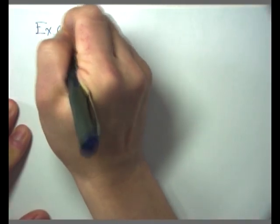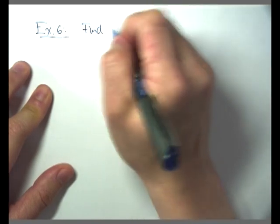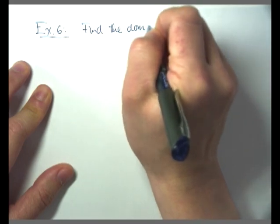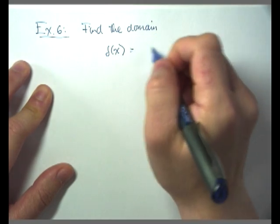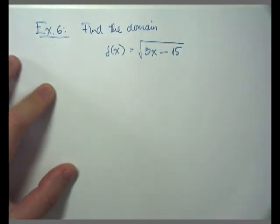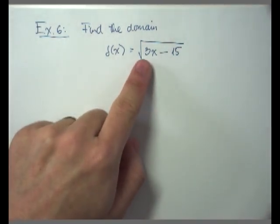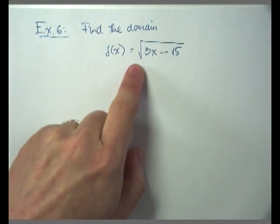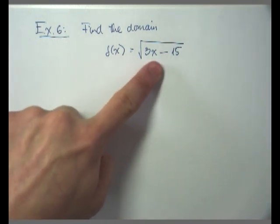In my sixth example, let's look at a different type of function. We want to find the domain. Here my function is f of x equals the square root of 3x minus 15. In this function I do not see any fractions; however, I do see a square root. Out of the two concerns, this function runs into the second concern, where we have a square root.